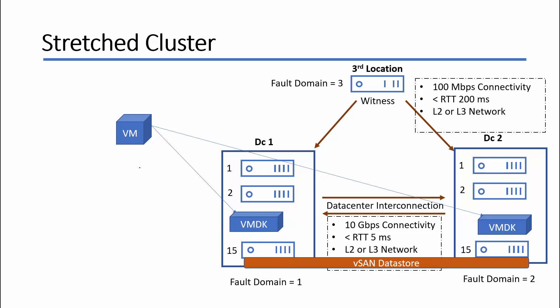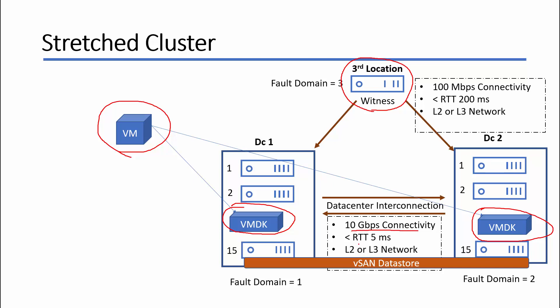Look at the picture here. We have a virtual machine running in a stretched cluster. A copy of the virtual machine VMDK is available at data center 1, another copy is available at data center 2, and a witness is running in a third location. Between the two data centers, the minimum requirement for stretched cluster interconnection is 10 gigabit network connectivity, and the round trip time should be less than 5 milliseconds.